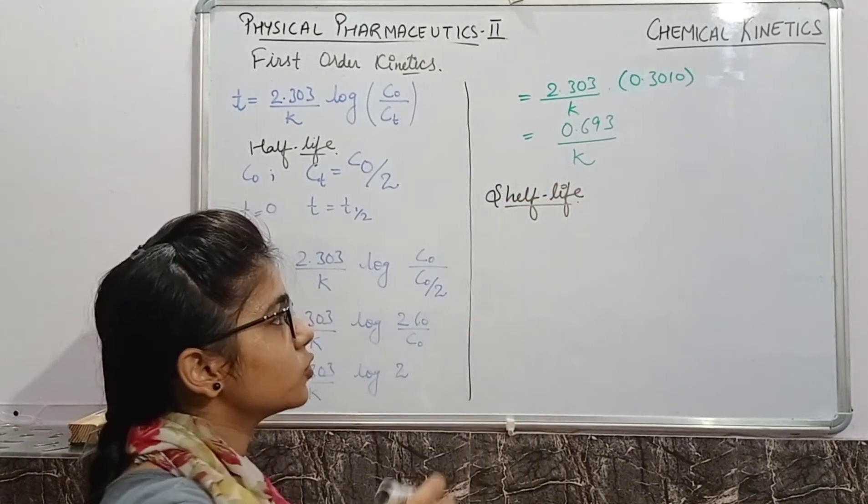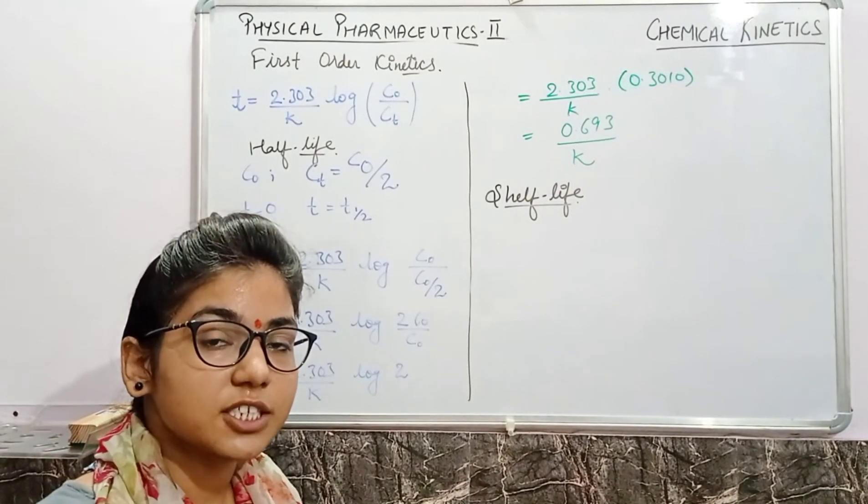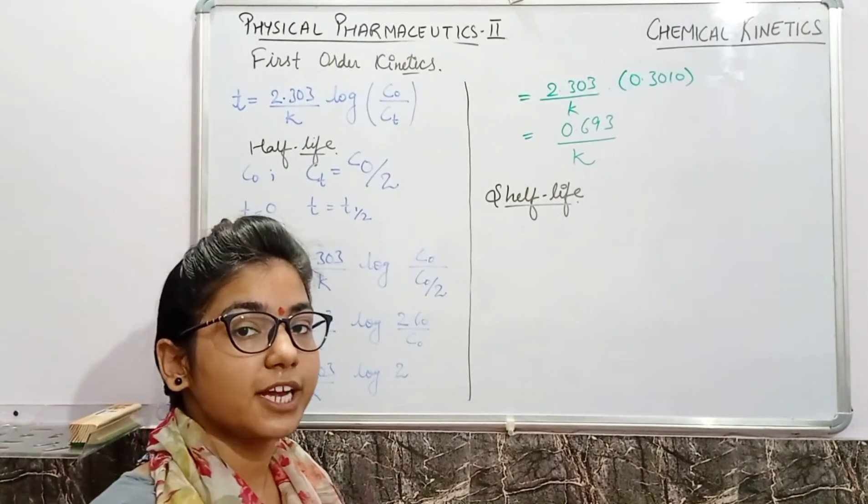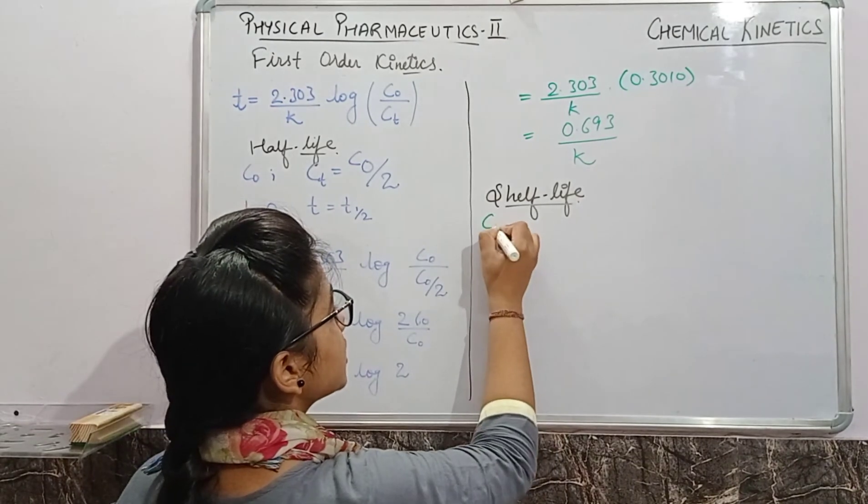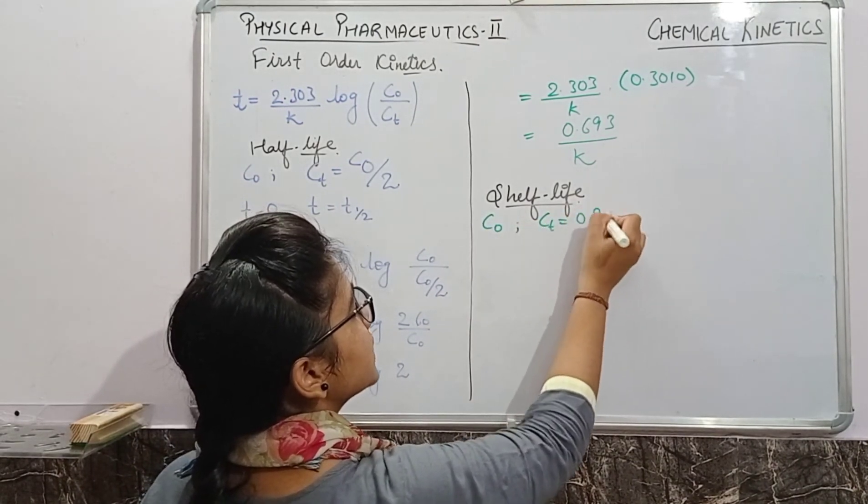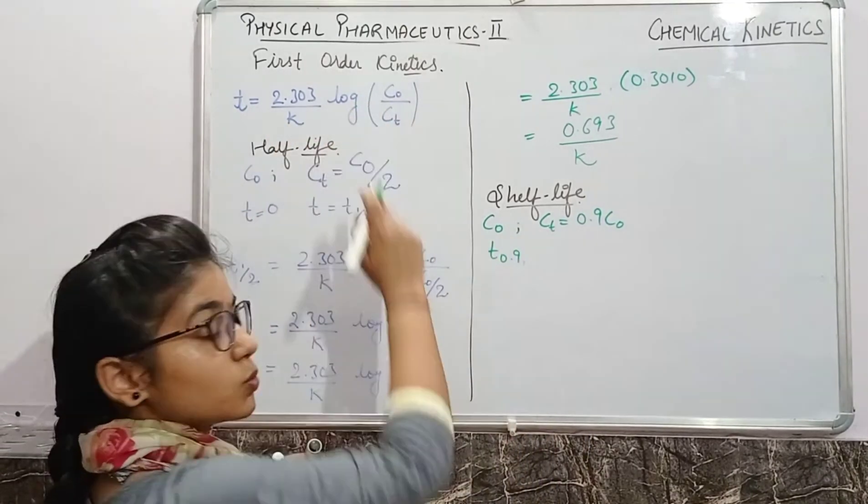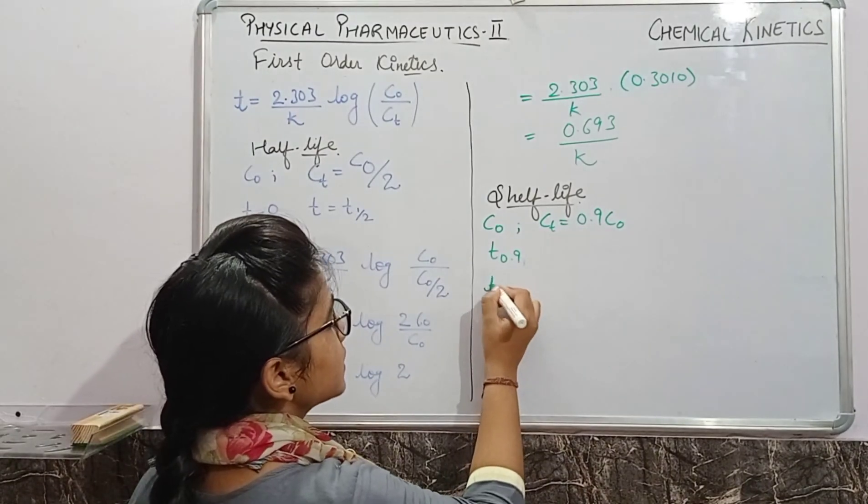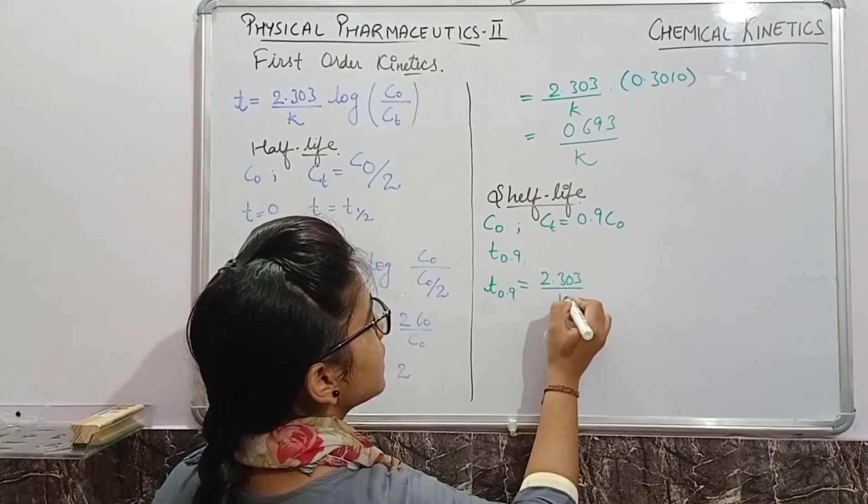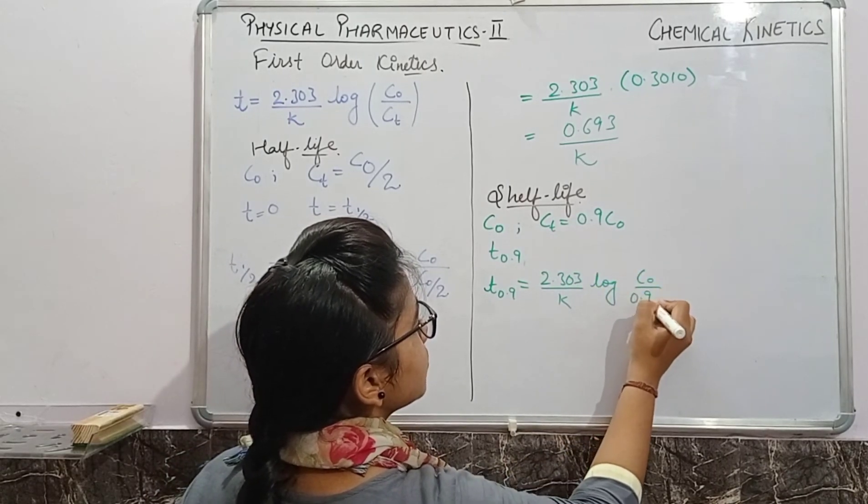In shelf life, we have to keep in mind that initial concentration becomes 0.90 percent of final concentration. That means your initial concentration is c0 and final concentration is 0.9 c0, and time will be t0.9. Now putting these values in equation 1, it will become t0.9 equals 2.303 upon k log(c0/0.9c0).